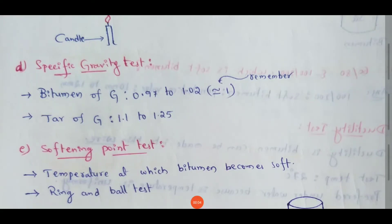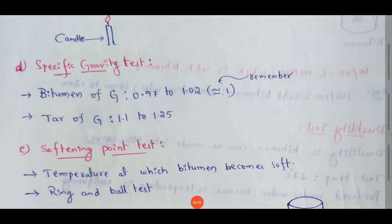Next topic: bitumen specific gravity test. The specific gravity of bitumen is defined as the ratio of the mass of a given volume of bitumen of known content to the mass of an equal volume of water at 27 degrees centigrade.